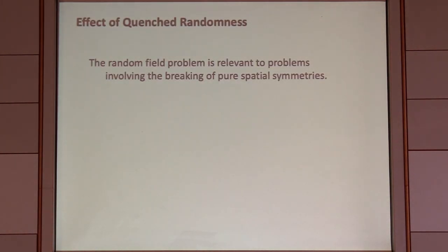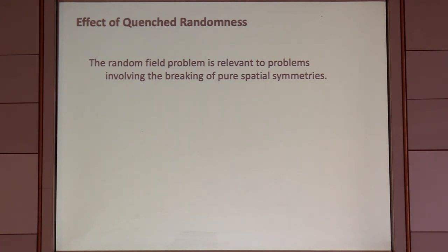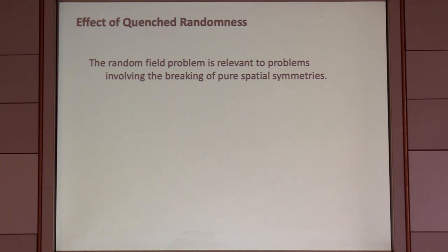Now I want to use this problem to investigate what happens when we include disorder. The random-field problem is the technical term in statistical mechanics for the problem relevant to any situation in which disorder couples directly to the order parameter. It's for sure relevant to any problem in which the broken symmetries involved are pure spatial symmetries. For the spin density wave, where the spin involves time reversal symmetry, the coupling to disorder is a little more subtle — that's why I transferred to the charge density wave version.